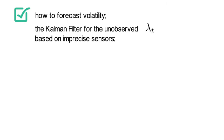In our course here, we have already talked about how to forecast volatility. As for the factor premiums, we've also talked about how to use the Kalman filter to back out the unobserved lambda t based on imprecise sensors.